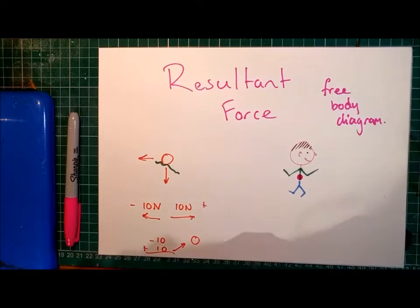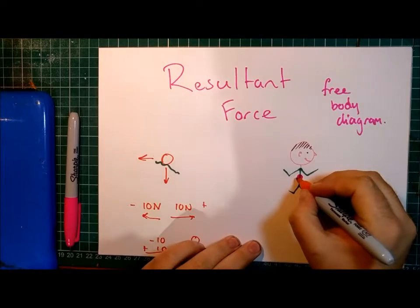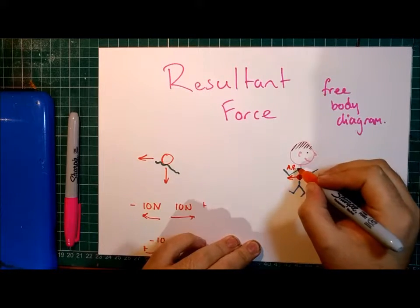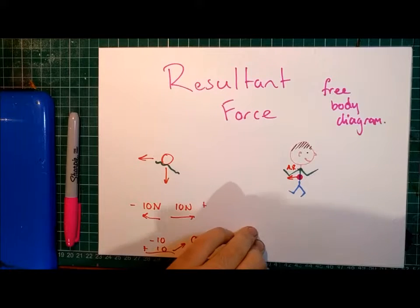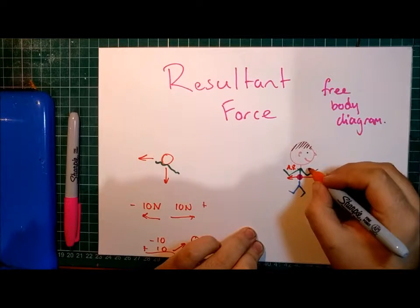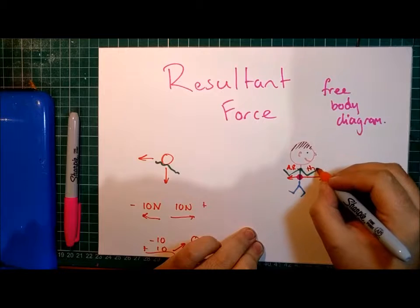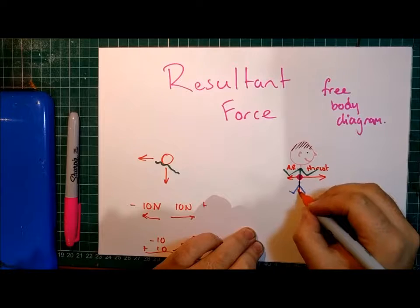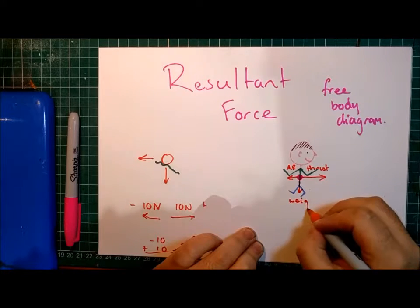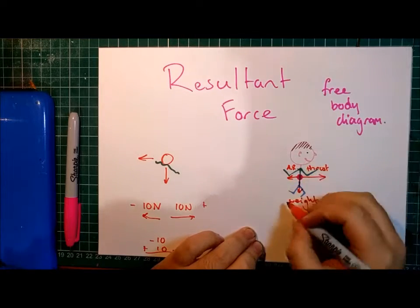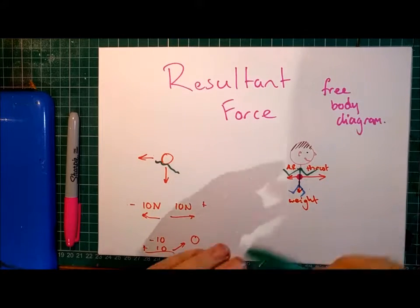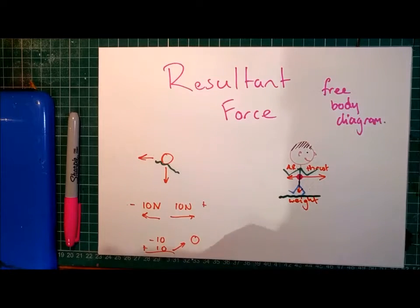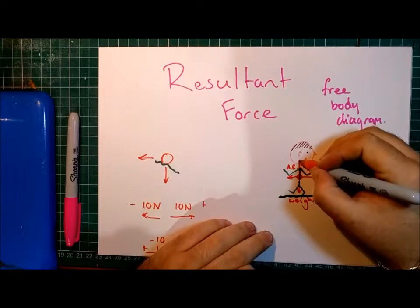The stronger the force, the longer the arrow. So, in this instance here, we might have forces like air resistance acting in the opposite direction that the man is running. We might have thrust, which in this case is produced by the pushing of the feet against the floor. You might have weight acting downwards. And, as our running man is standing on a surface, you would also have an equal and opposite reaction force.